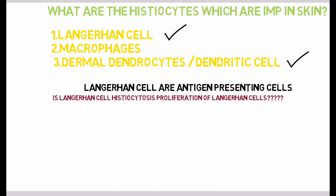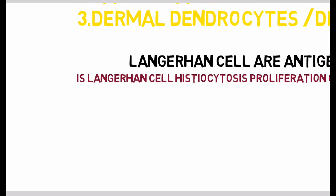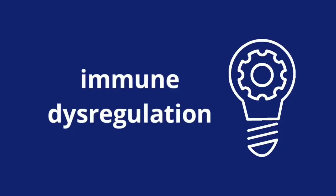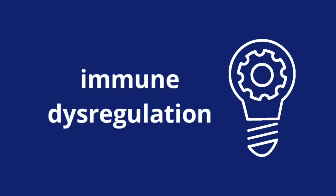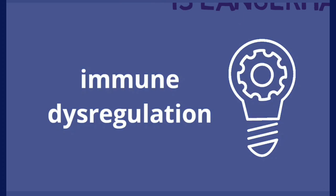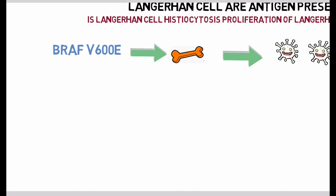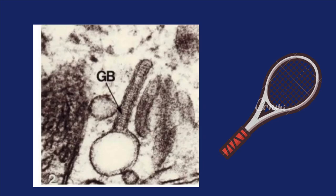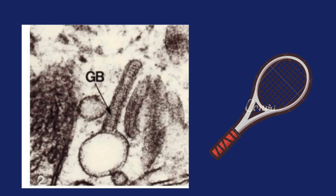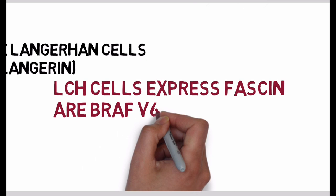Now, why would somebody get Langerhans cell histiocytosis? For long, it was considered an immune dysregulation, but with the latest research this has been proven wrong. There is no immune dysregulation in Langerhans cell histiocytosis. It occurs because of a mutation called the BRAF V600E mutation, where bone marrow cells go crazy and start producing a clone of cells identical to Langerhans cells in the sense that they express the same markers — CD1a, S100, and CD207, which is also called langerin. This langerin also forms tennis racket-shaped intracellular granules called Birbeck granules. These pathological cells differ from normal Langerhans cells because they express fascin, another marker, and all of them are BRAF V600E mutated — hence they are called pathological Langerhans cell histiocytes.